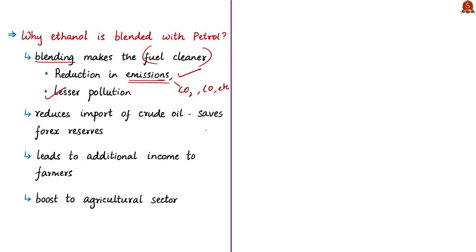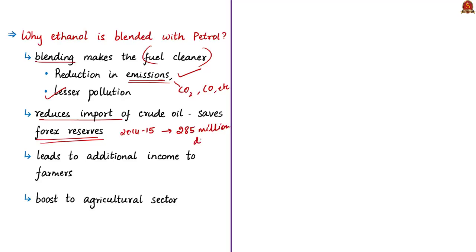India depends heavily on other countries for crude oil imports. Increasing ethanol blending reduces import dependency and saves forex reserves. The Press Information Bureau states that in 2014–15, around 285 million US dollars were saved as a result of ethanol blending. Additionally, in years of excess sugarcane production, the surplus can be utilized for ethanol production, giving farmers remunerative prices.